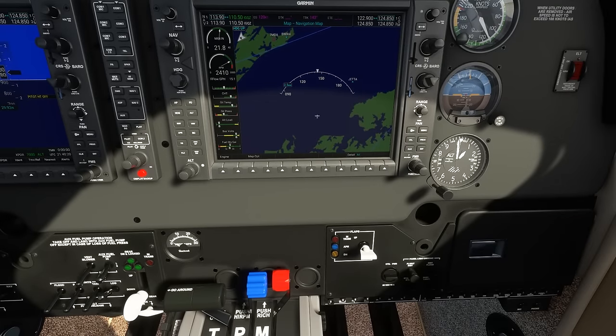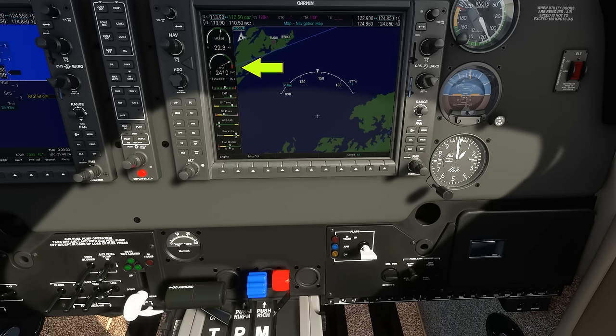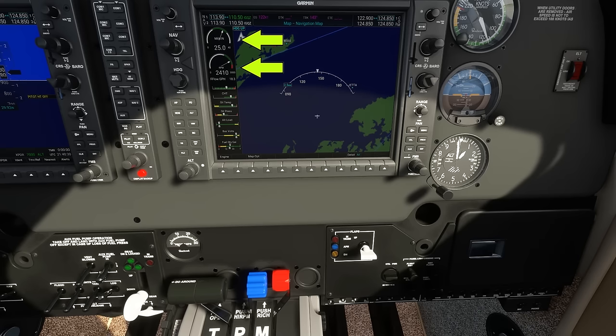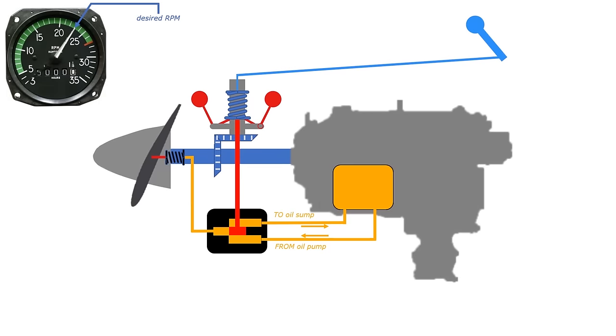In our constant-speed propeller Bonanza though, if we move the throttle forward, we don't see the same increase in RPM. Notice though, that there is a gauge for power changes, which is the manifold pressure gauge. This measures the pressure of the fuel-air mixture being fed into the cylinders. More pressure equals more power.